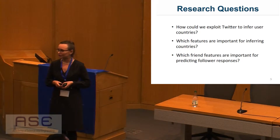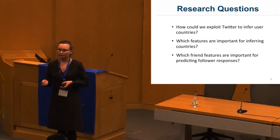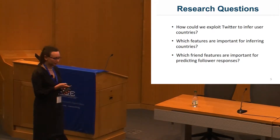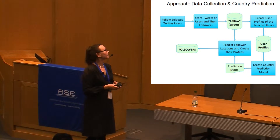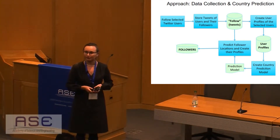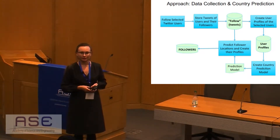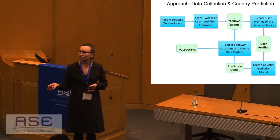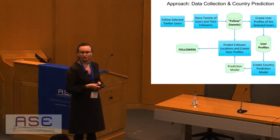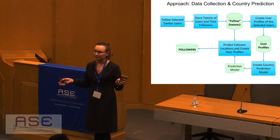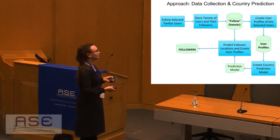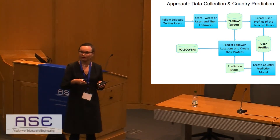We analyze which features are most important for finding user interests in their followers. Our approach involves two big steps. First, we collect our dataset using the Streaming API and Python library. Then, based on the content and metadata associated with tweets, we create user profiles which include Twitter-specific features such as hashtag usage, usage of mentions of other users, tweeting times, and other features. We use these features for building user profiles, which we aggregate for building our prediction model used for predicting countries of origin of user followers.